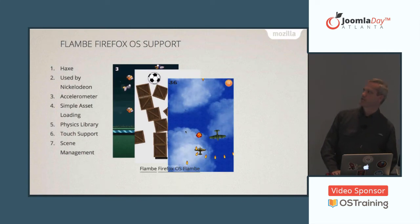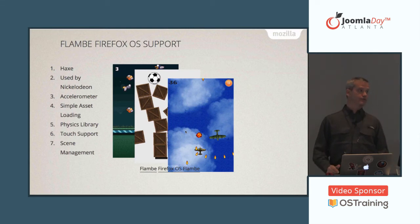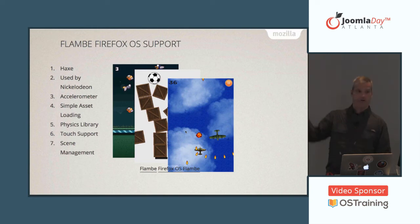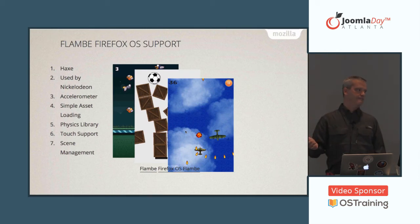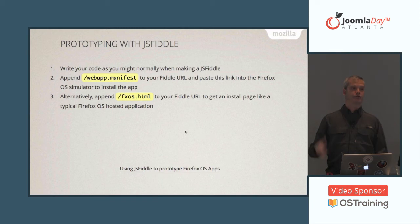Another framework we just got working is an engine called Flambe — it's based on a language called Haxe, which is more or less Java-esque and came out of the ActionScript world. It's used by Nickelodeon for their games. It has accelerometer access, asset loading, physics library, touch support, and scene management. It generates an HTML5 app for Firefox OS. Also, if you're familiar with JS Fiddle, we have quick links to generate a manifest file and turn your JS Fiddle project straight into a Firefox OS project.